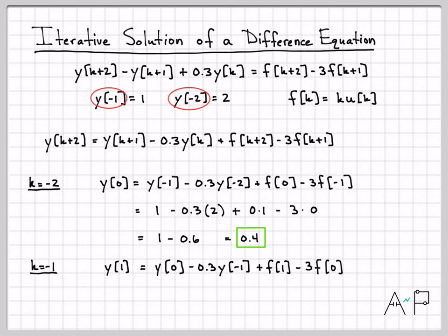You can see what is happening here: the value that I just previously computed, Y of zero, is right here. That's why we call it iterative. Every new value that I compute, in this case Y of one, depends on the previous values I've already computed.